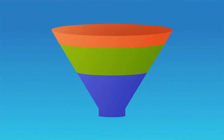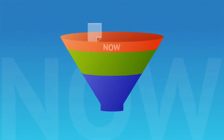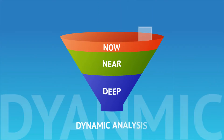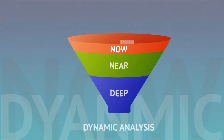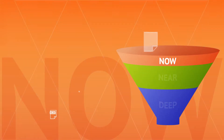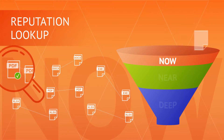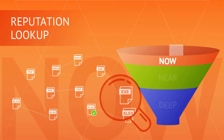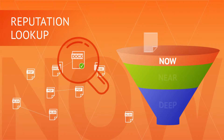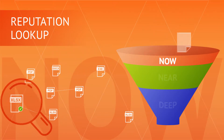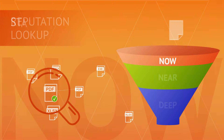VMRay's ability to analyze and detect threats other vendors miss stems from our multi-layered, in-depth approach and groundbreaking dynamic analysis technology. The first layer of detection is rapid reputation lookup. VMRay compares submitted samples to known good and malicious files and URLs, filtering out known samples in milliseconds so you can focus on what matters.